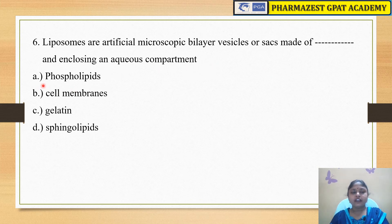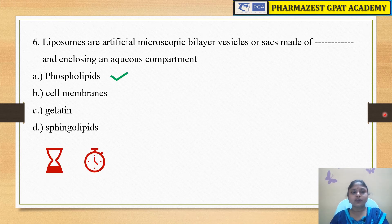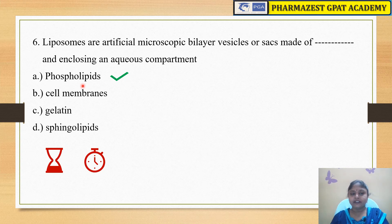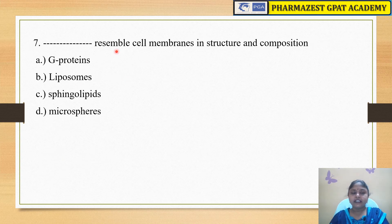The next question is: liposomes are artificial microscopic bilayer vesicles or sacs made of dash and enclosing an aqueous compartment. The options are A) phospholipids, B) cell membranes, C) gelatin, and D) sphingolipids. The answer is phospholipids. Liposomes are artificial microscopic bilayer vesicles or sacs which are made of phospholipids.